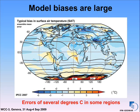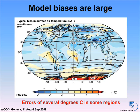Model biases are a real issue. This is from the latest IPCC report — the ensemble mean error in surface air temperature — and even in the ensemble mean you have errors of several degrees. In some models, errors of up to 10 degrees. We should be very cautious and really work to improve the models, keeping in mind that they have these large biases.